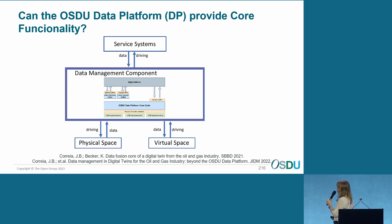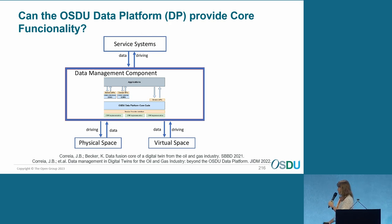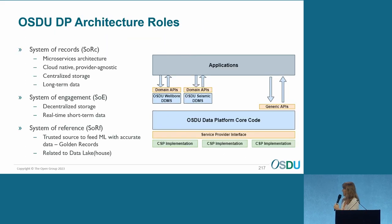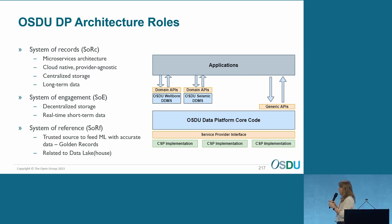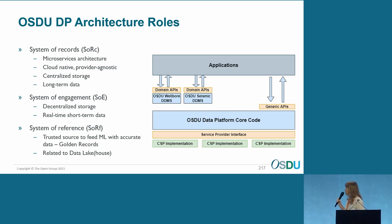Our first question was: can the OSDU data platform provide the core functionality for that? We have two papers on that together with a student of mine, Jacqueline Correa. The answer is yes, it can provide it. Interestingly, OSDU has different architectural roles and can be used in multiple ways. It was initially devised as a system of records for long-term data, providing a microservice architecture, cloud-native and provider-agnostic, with centralized storage and comprehensive APIs. It can also serve as a system of engagement for real-time short-term data with decentralized storage.